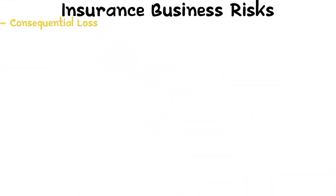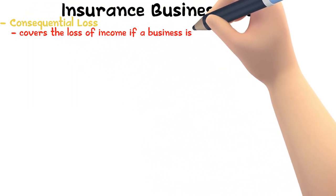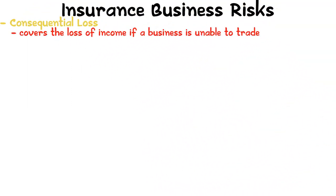Consequential losses. This covers the loss of income if a business is unable to trade due to any unforeseen circumstances. Some insurance policies cover the loss of income if there is a power cut, illness, loss of key workers, or no components available due to supply delay. These losses are called indirect losses.